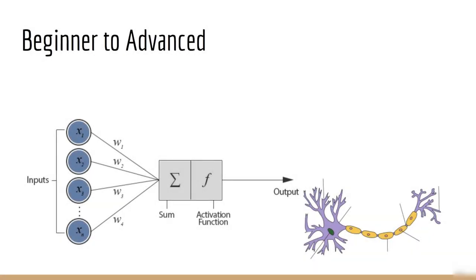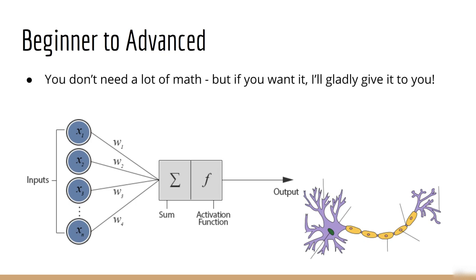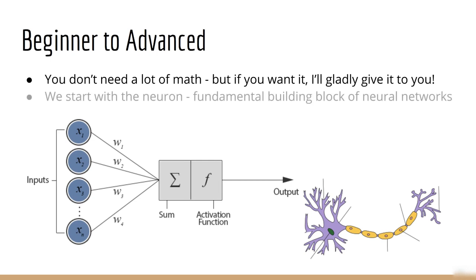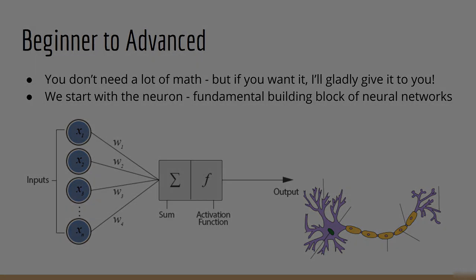This course is designed to be a beginner to advanced course, so you don't need a lot of math and background knowledge. But of course, if you're into that sort of thing, I certainly have resources for you. We're going to start by looking at basic machine learning in the form of a neuron, the fundamental building block of neural networks.